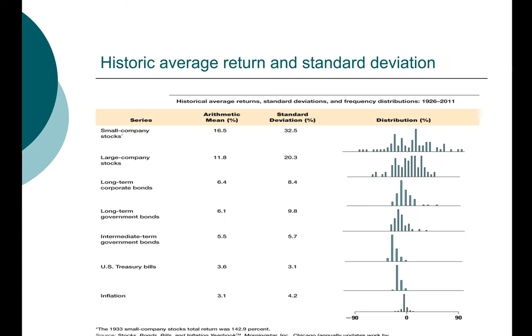Now let's take a look at the historic return combined with the historic standard deviation for the various categories of investment. We have already seen that small stock gives us the highest return of 16.5 percent. We saw that the line is the most jagged, but now we can look at the standard deviation. It also has the highest standard deviation. Similarly, for large company stock, it has the second highest return and the second highest standard deviation.